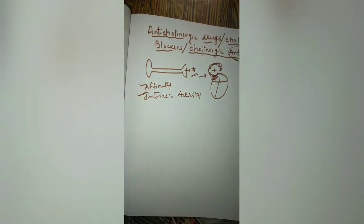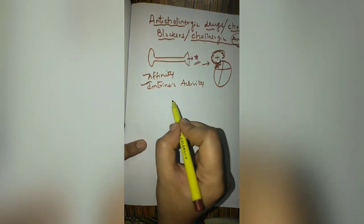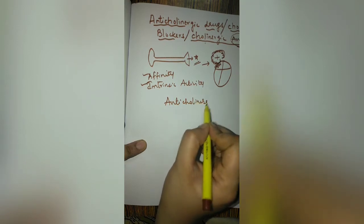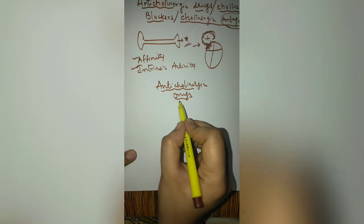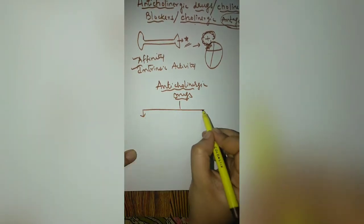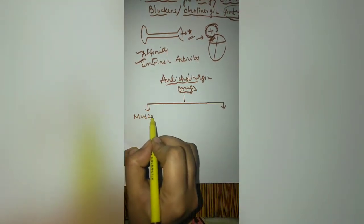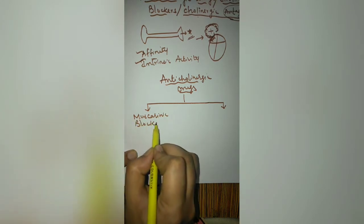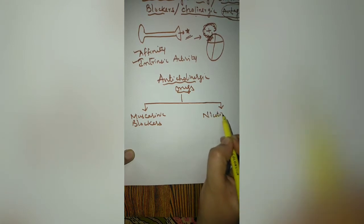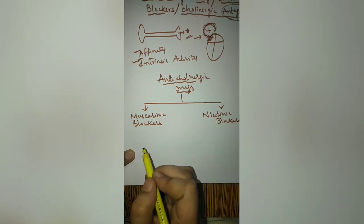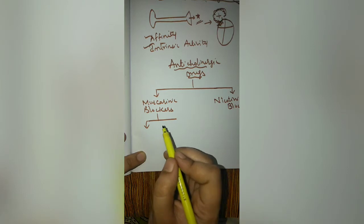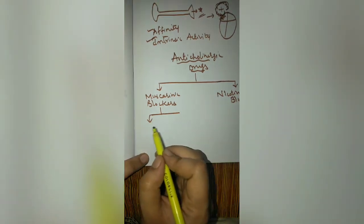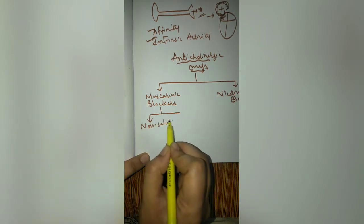Anticholinergic drugs block the receptor, so depending upon the receptor we can classify them into drugs that block the muscarinic receptor and drugs that block the nicotinic receptor — giving us muscarinic blockers and nicotinic blockers. Under muscarinic blockers, a drug like atropine can block all five subtypes of the muscarinic receptor, so we call it a non-selective blocker.